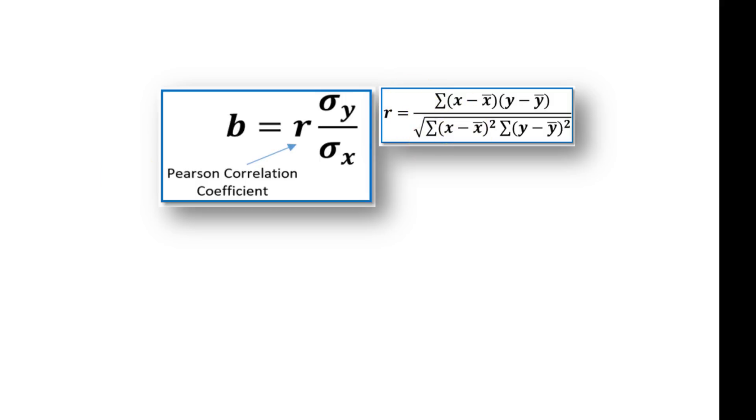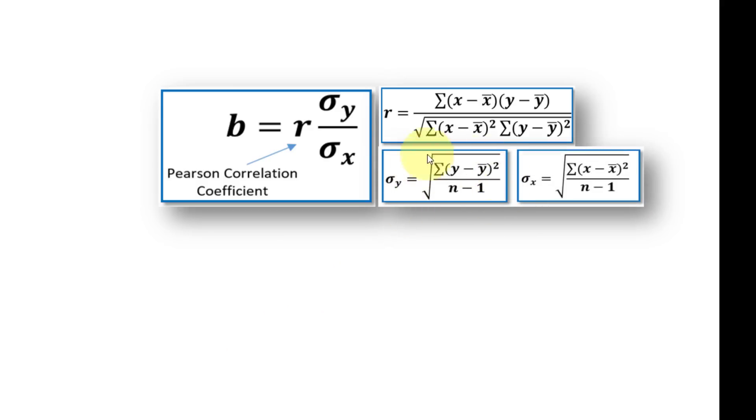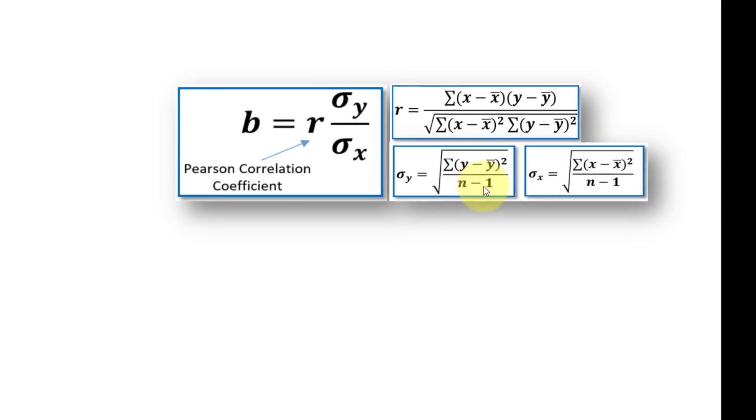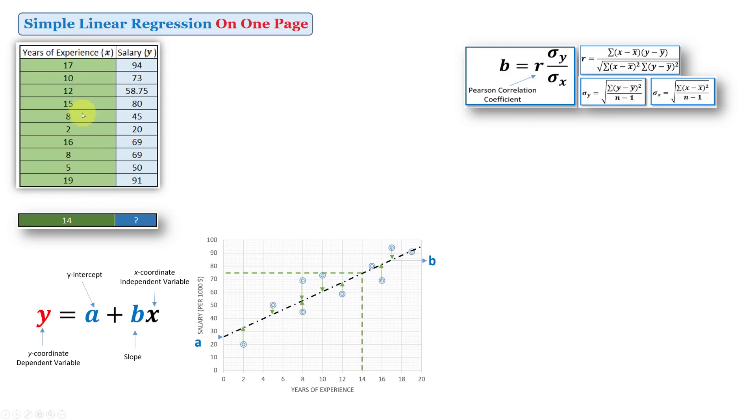So once we already know the average, we can simply calculate all these values here. I'm going to show you how to calculate. Also, I'm going to need the standard deviation of y and x. Simply for y, it's equal to the summation of (y minus ȳ)² divided by n minus 1, and n here is the number of samples or examples or instances. In this case we have 10, so n here will be 10.